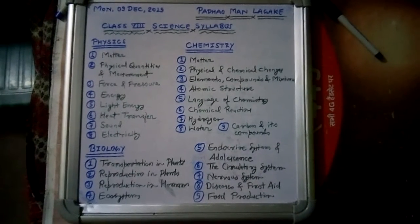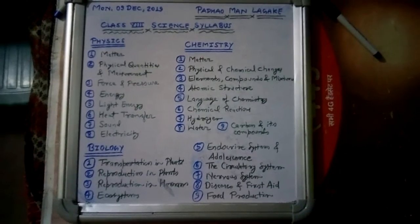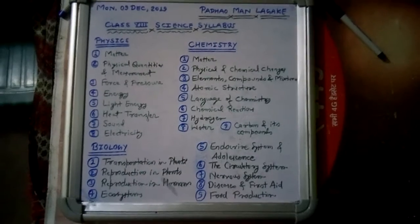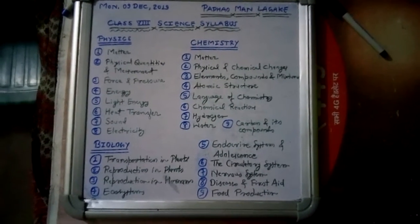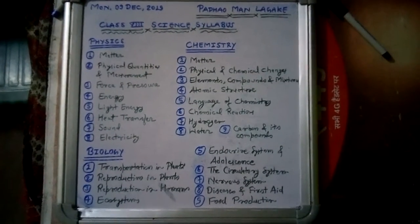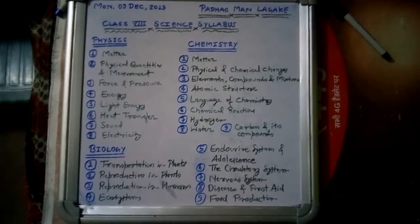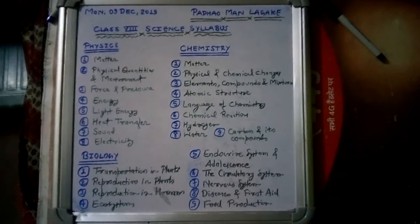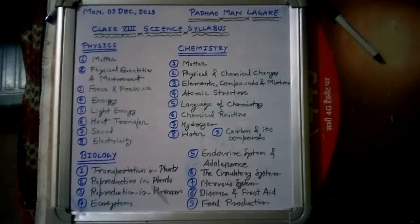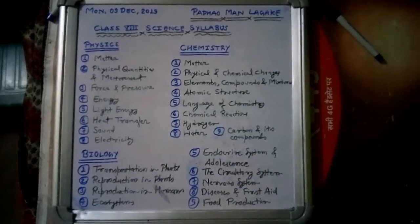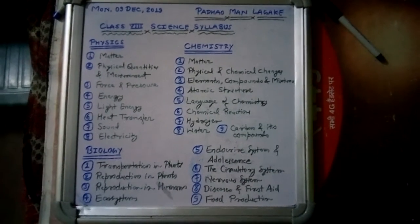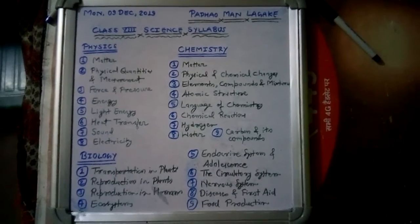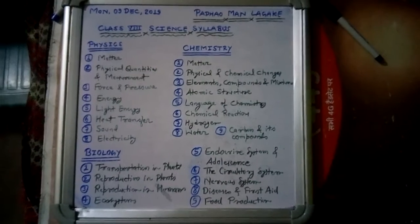There are three branches in science: physics, chemistry, and biology. In physics, there are a total of 8 chapters. Chapter 1: Matter, Chapter 2: Physical Quantities and Measurement, Chapter 3: Force and Pressure, Chapter 4: Energy, Chapter 5: Light Energy, Chapter 6: Heat Transfer, Chapter 7: Sound, Chapter 8: Electricity.